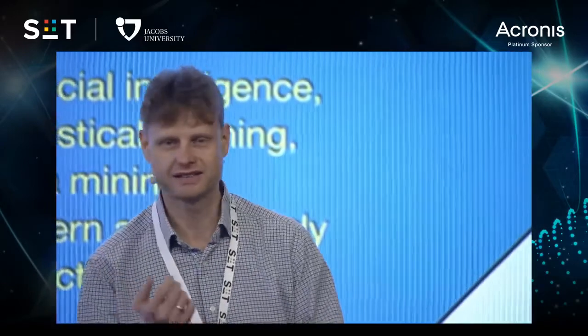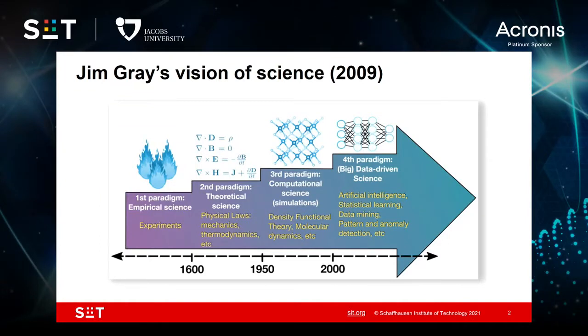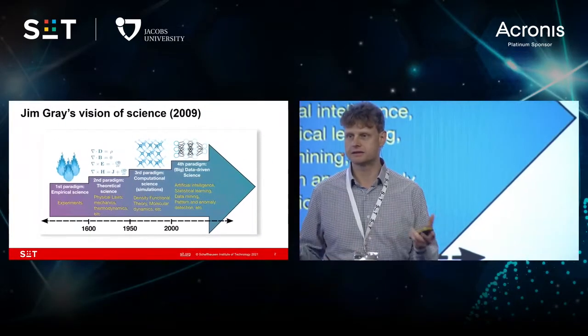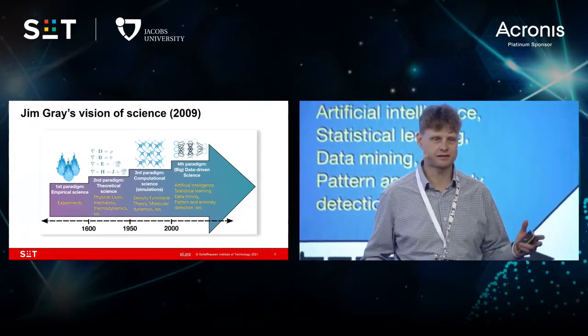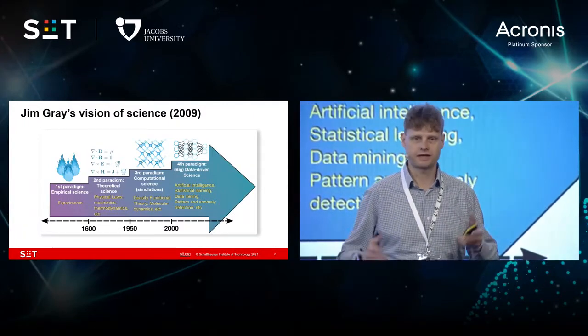If we look at how science evolved, initially it was purely experimental. Then we began getting laws of physics like chemistry, etc. And then with the introduction of computers, we realized that we not only can experiment, but we can actually model what happens with experimentation. We got complex equations. Unfortunately, the only problem is that it takes a lot of time and resources to do the real computation and modeling of a real experiment, simply because the real systems are too complex.